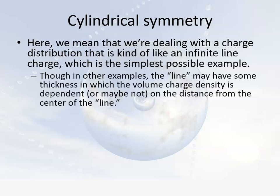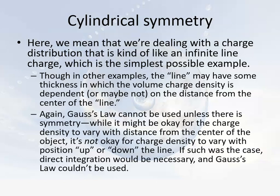So the line might have thickness or it might actually just be a line. Keep in mind that Gauss's Law cannot be used if there is any sort of angular dependence or any sort of z dependence if we have our cylinder concentric with the z-axis. It only works if the charge density is independent of position along the cylinder and independent of angle, but it still works if it's not independent of distance from the center of the cylinder.